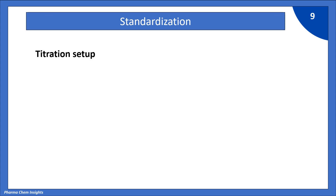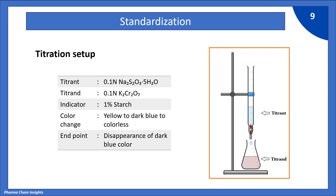Next, we will standardize this sodium thiosulfate solution using potassium dichromate. Potassium dichromate is a strong oxidizing agent and is often used as a primary standard in iodometric titration. The titrant is 0.1 normal sodium thiosulfate filled in the burette, and the titrand is 0.1 normal K₂Cr₂O₇ solution in a conical flask. The indicator is 1% starch solution. The color change goes from yellow to dark blue to colorless, with the endpoint being the disappearance of the dark blue color.